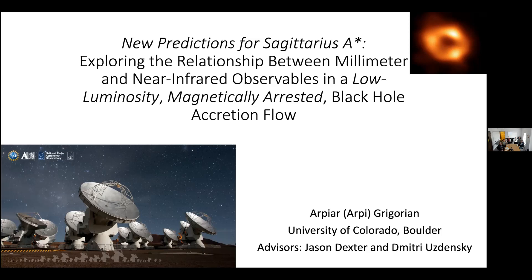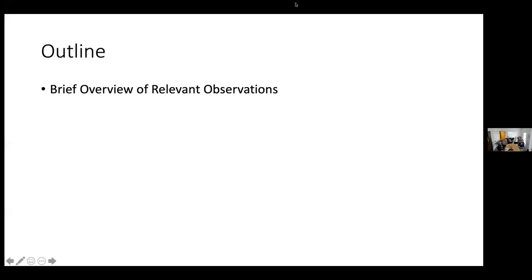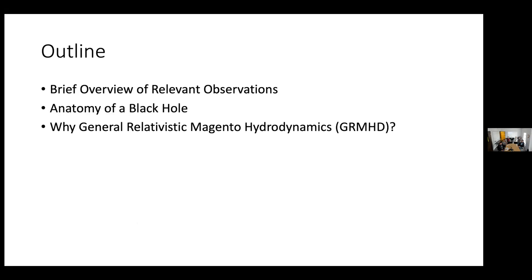I'm going to focus on global models of the accretion flow in Sagittarius A-star, and show that there's a relationship between the 230 gigahertz size of the emission and the near-infrared light curve. This relationship seems to persist across all the unknown parameters of Sagittarius A-star. The talk will cover key observations, the anatomy of a black hole, GRMHD or general relativistic magnetohydrodynamics, how we make images from this model, and finally our results. Feel free to interrupt with questions.